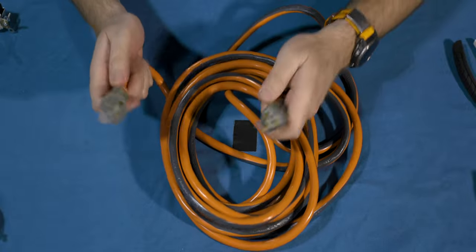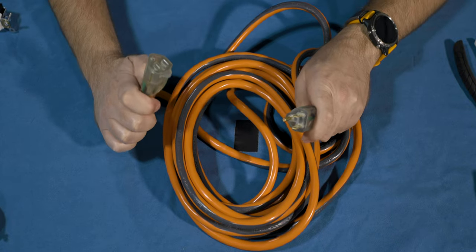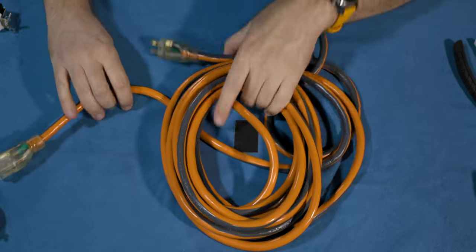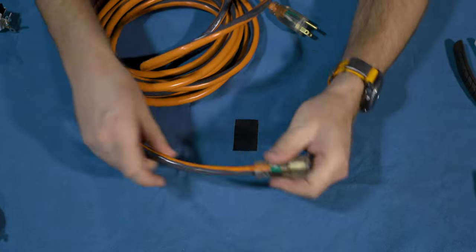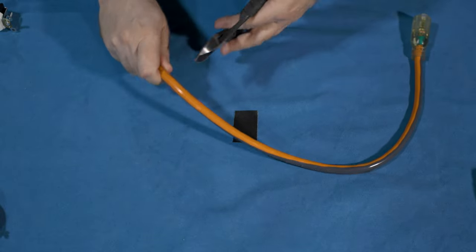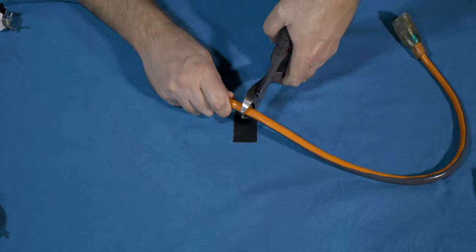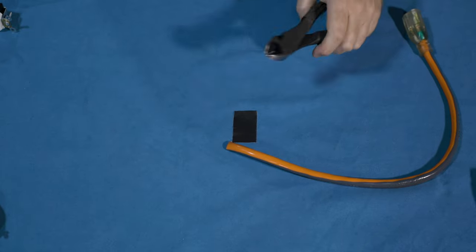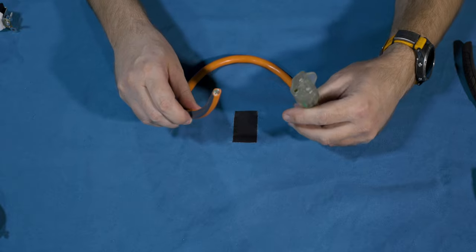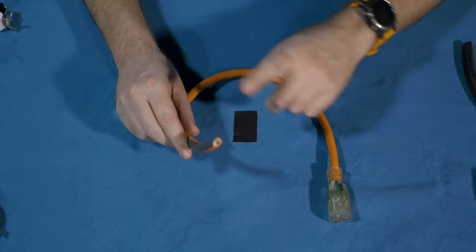The extension cord. So just a standard three prong, both sides. This is the side that we will keep. This is the side we're going to cut off. We're going to cut it off right around here. Snip. Just like that. So we cut off the female side. We're going to save this because we're actually going to need some of these wires here in a little bit.